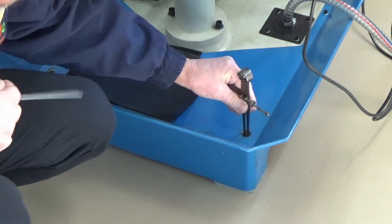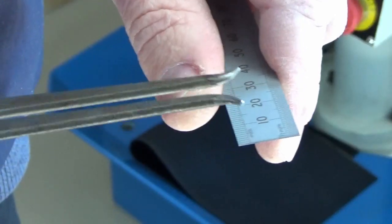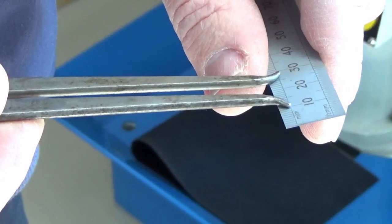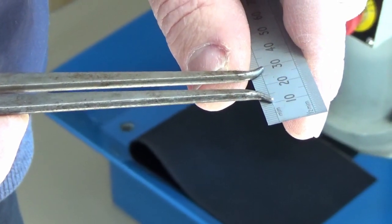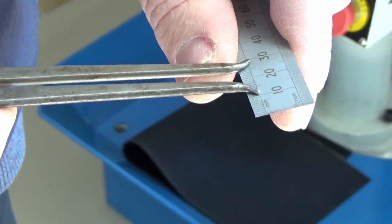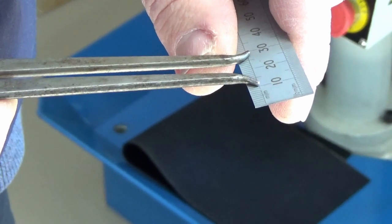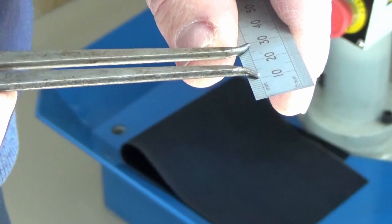So what we're going to do is just do a measurement here. With the outside dividers, we just take that measurement off there, and we're just a fraction over 18 mil, about 18.5 mil.